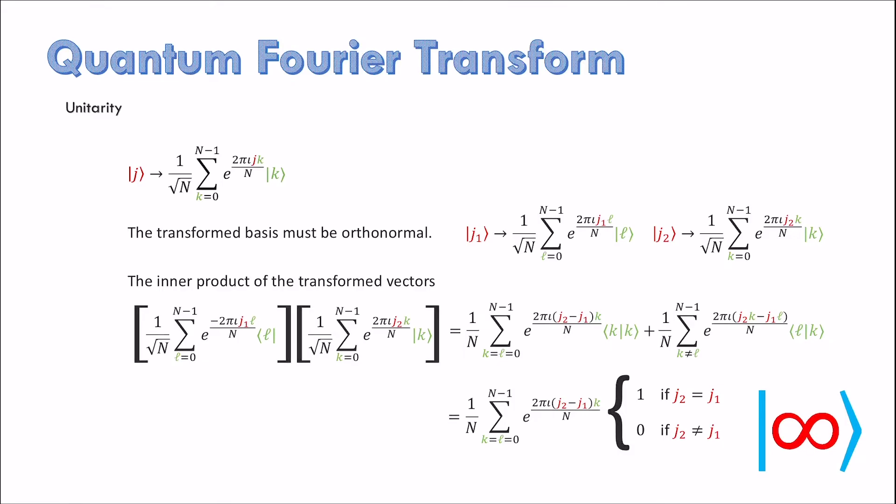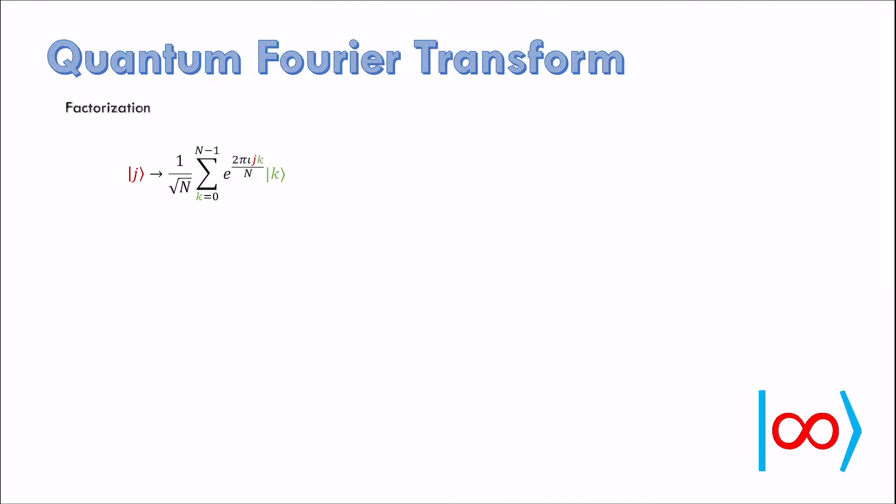The next thing we show is that the transformed vectors are factorizable. After this the circuit for quantum Fourier transform becomes apparent. For simplicity, we assume that the big N is a power of 2. Then the numbers J and K are n-bit numbers such that bits in their binary expansion correspond to states of qubits.